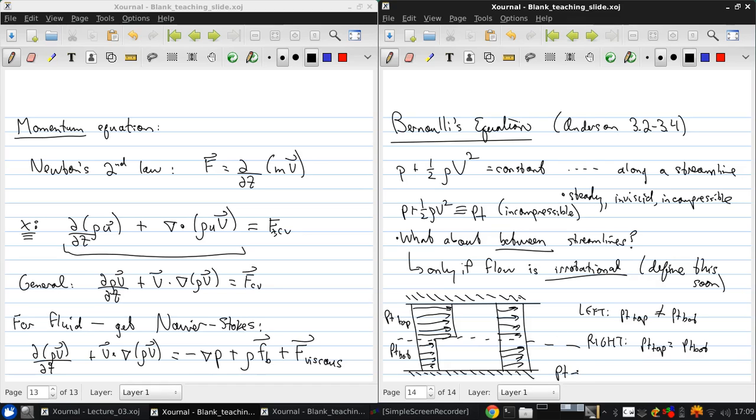So just as a reminder, pt, this is the stagnation pressure. And we use the term stagnation pressure because as you can see from the definition here, if the velocity goes to zero, then the pressure just becomes the stagnation pressure. So the definition of stagnation pressure is the pressure you obtain if the flow is decelerated to zero velocity.